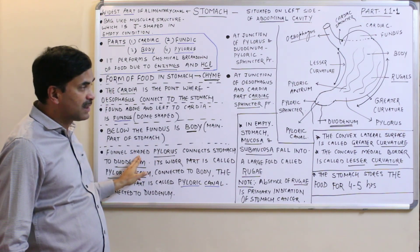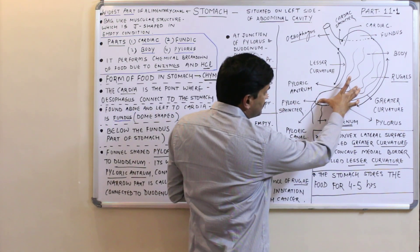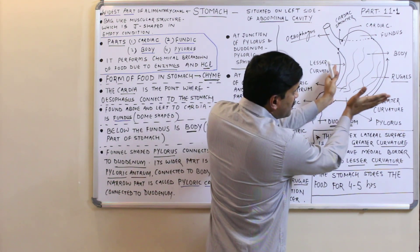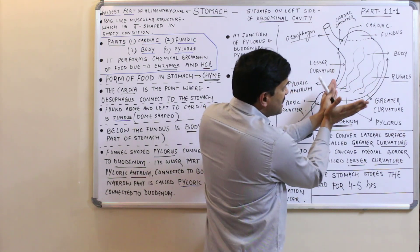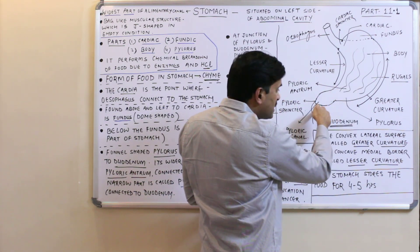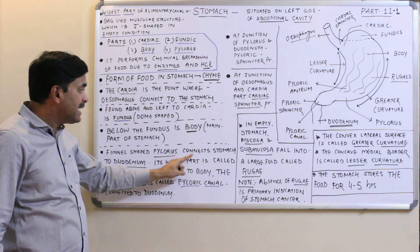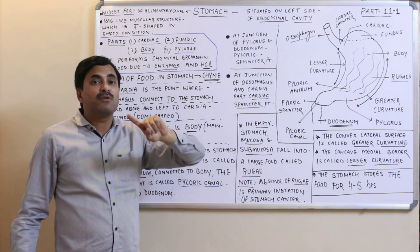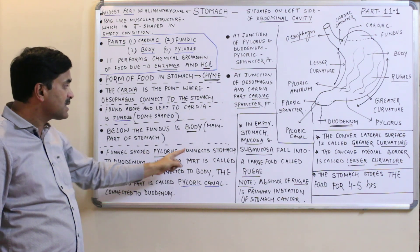The last part is the pylorus, which is funnel-shaped. The part of the pylorus towards the body is broad, and the part towards the duodenum is narrow. The pylorus connects the stomach to the duodenum, as it is the part of the stomach which actually opens into the duodenum, the first part of the small intestine.